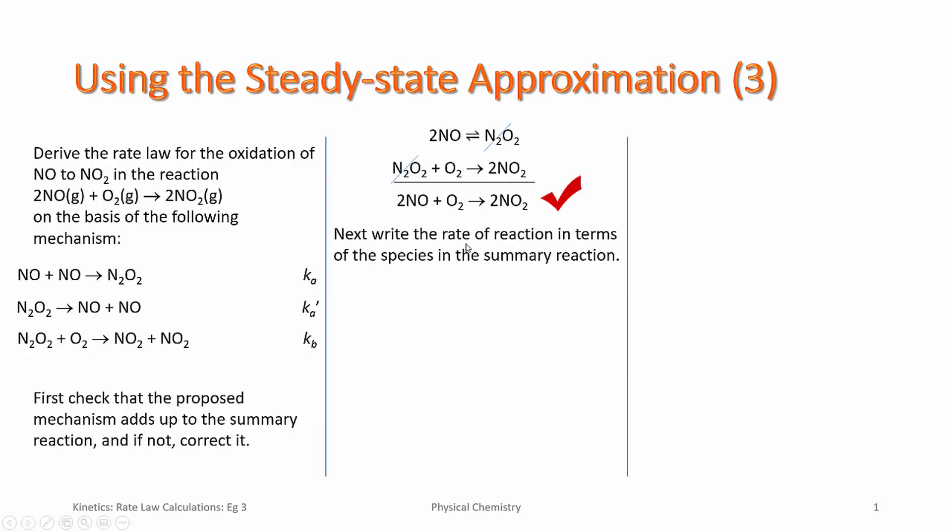Next, we write the rate of reaction in terms of the species in the summary reaction. There are, in fact, three. So we can focus on any of these to derive the rate law. Now, it's clear what our intermediates are. Because N₂O₂ does not appear in the summary reaction, but it is present in the mechanism.